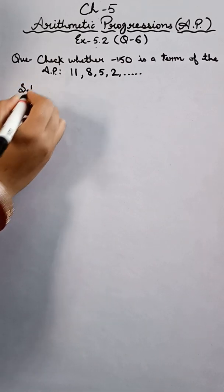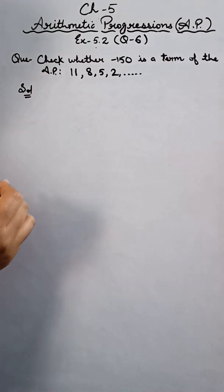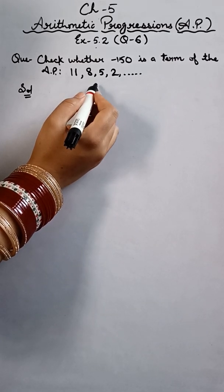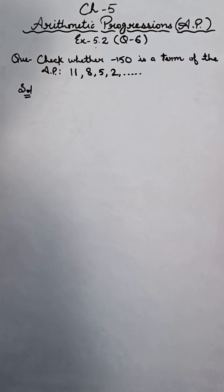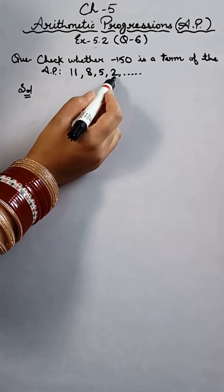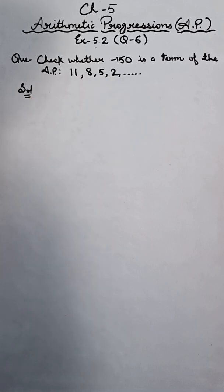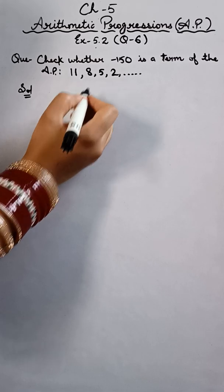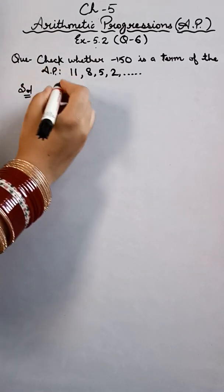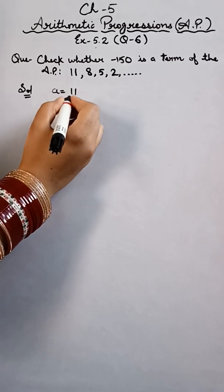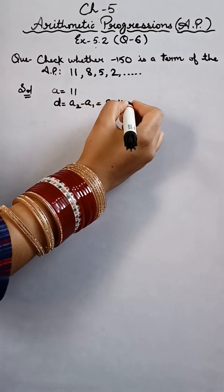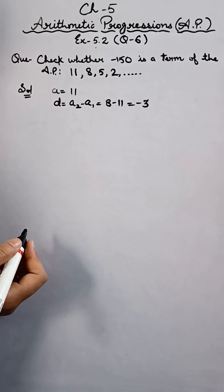Let's start the solution. The criteria is, if we find out the number of terms, we can determine if it's a term or not. A₁ is 11. d is A₂ minus A₁, which is 8 minus 11, equals minus 3.